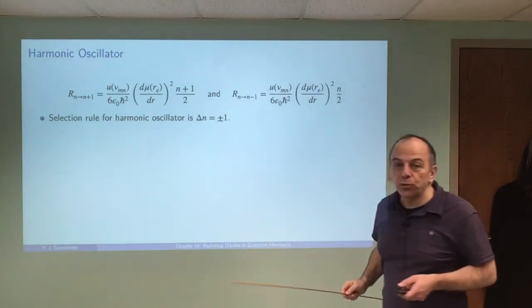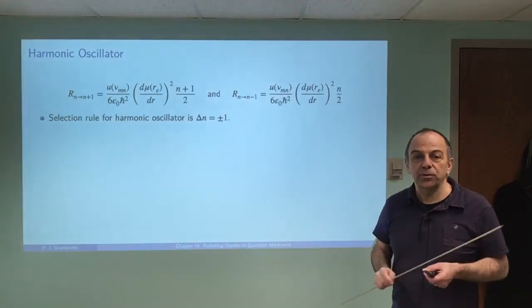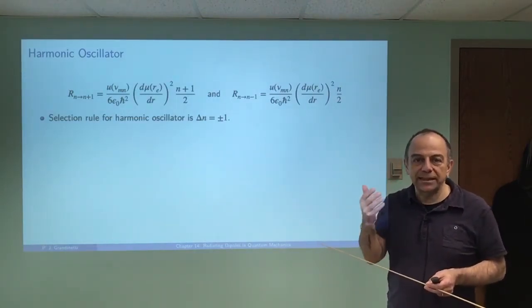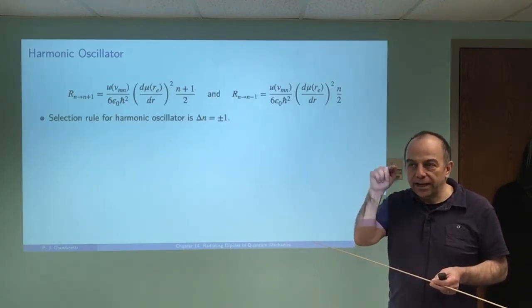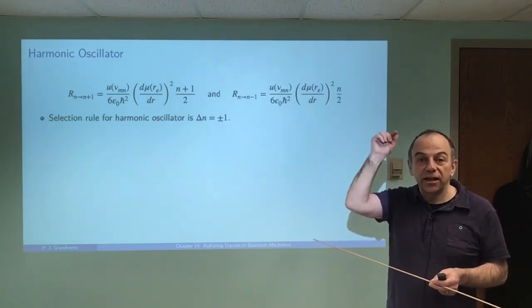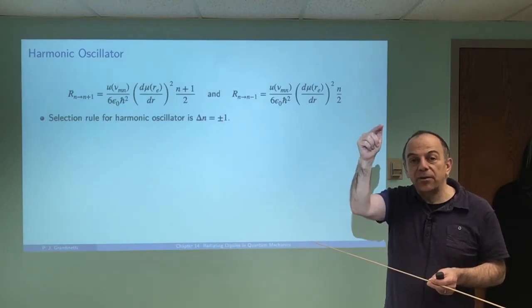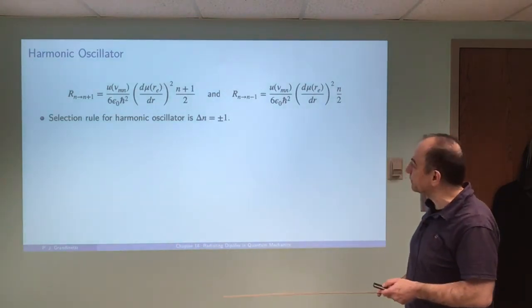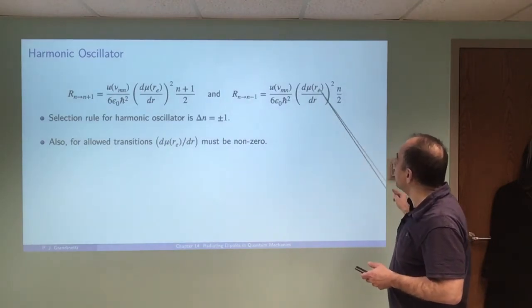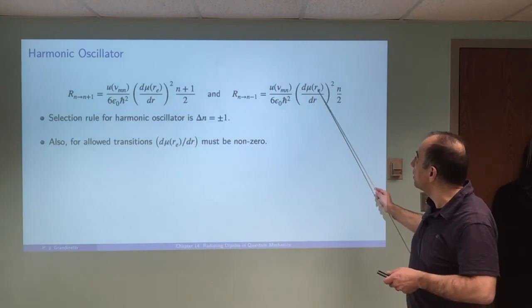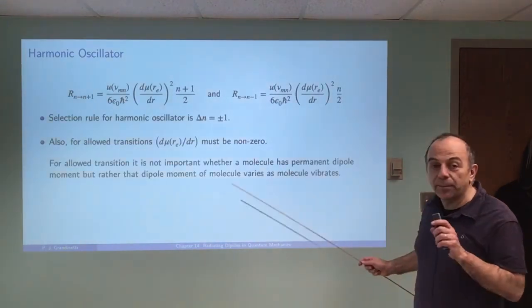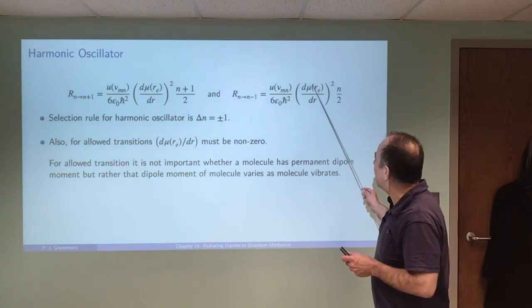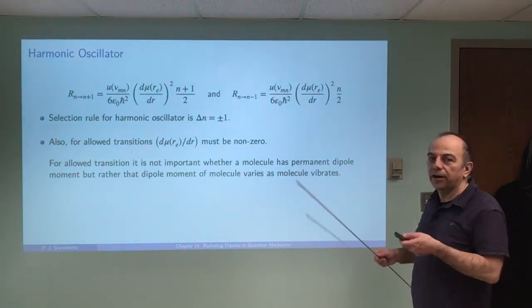With light shining on the harmonic oscillator — the diatomic molecule in this case — we can only use light to make transitions from a given n level to the level above it. Or if it's in an excited state going down, it can only go down by one value of n, emitting light in that step-by-step process. To get a non-zero transition moment, you require that the rate of change of the dipole moment be non-zero — you don't necessarily need a permanent electric dipole moment, only that the dipole moment changes as the molecule vibrates.